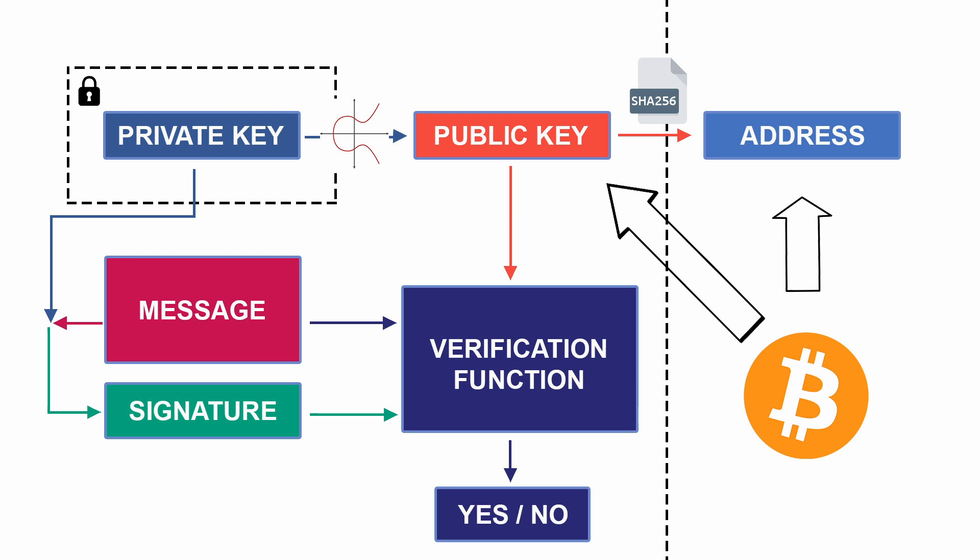The Bitcoin address acts as an additional protective layer for both public and private keys. That's why we need a Bitcoin address, and this is how it is different from the public key. I hope you now know the difference between public key and Bitcoin address, and the need for Bitcoin address. On this note, I will see you in the next video.